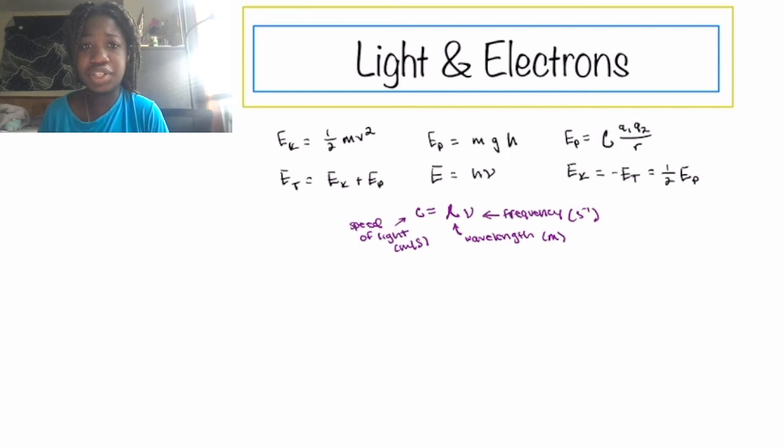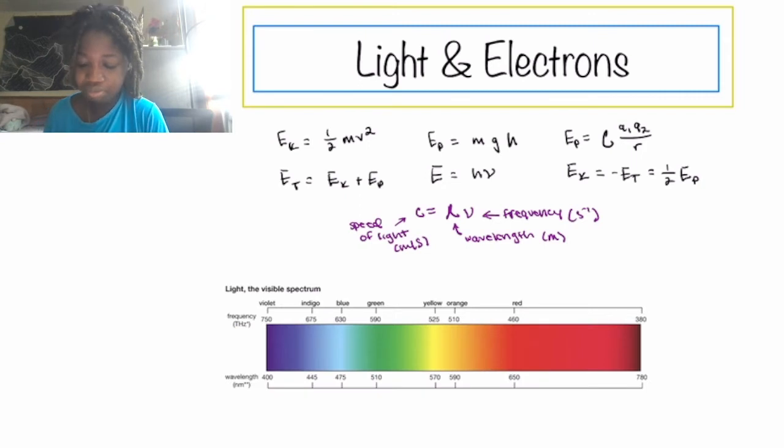And a good way of illustrating this equation is through the visible light spectrum. Now, this spectrum has, of course, the colors that we know: red, orange, yellow, green, blue, indigo, violet. But as you can see, each color has its associated frequency and associated wavelength.